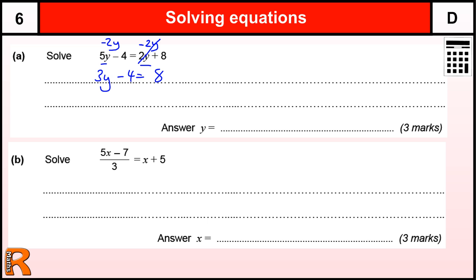Next step, if we then deal with the minus 4 by adding 4 to both sides, then we have 3y minus 4 plus 4 is 0 and 8 plus 4 is 12.